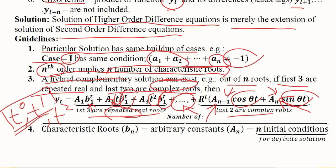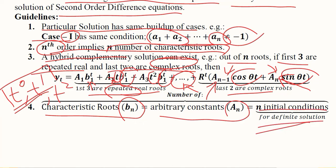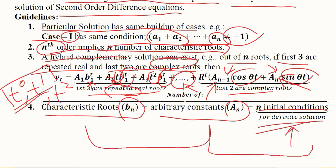If the characteristic roots are n in number, the arbitrary constants will also be n in number, and there will be n initial conditions required for the definite solution. All three of these quantities are equal to each other depending on the value of n. This is a useful observation to keep in mind.